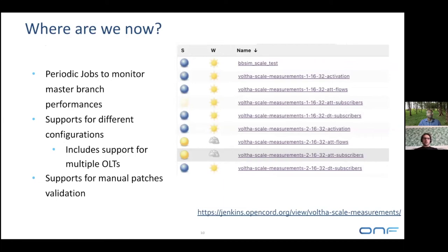We've talked about a lot of abstract things we did, but where do we stand now? At the moment, through our infrastructure driven by Jenkins, we have a set of periodic jobs to monitor performances on the master branch. That allows us to make sure no new feature or refactoring will make the performance worse. This has already allowed us to catch performance regressions on two or three occasions and quickly resolve them.